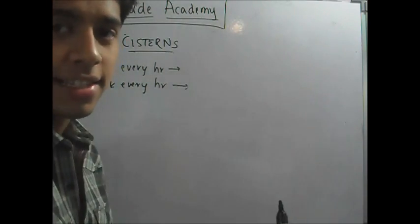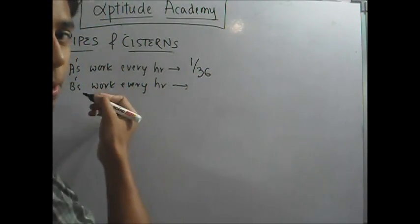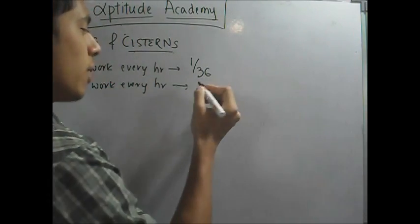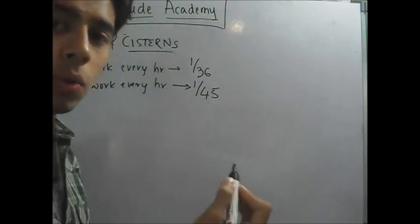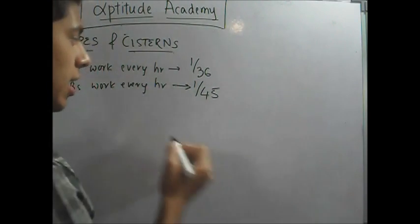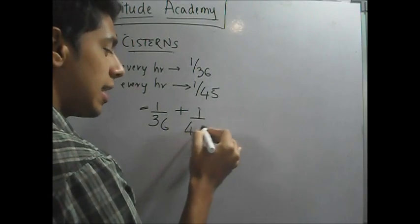Now, A fills a tank in 36 hours. So every hour, 1 by 36. Similarly, B in 45 hours. So every hour, 1 by 45. Now, since they both work together, the combined work every hour will be 1 by 36 plus 1 by 45.